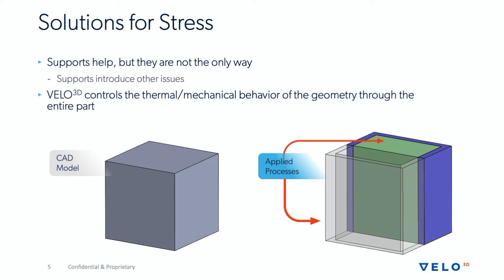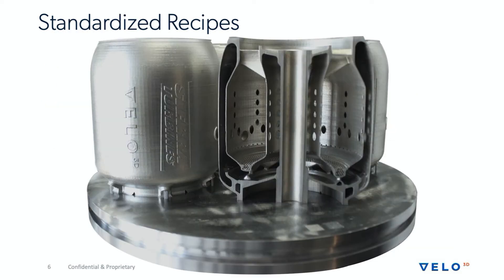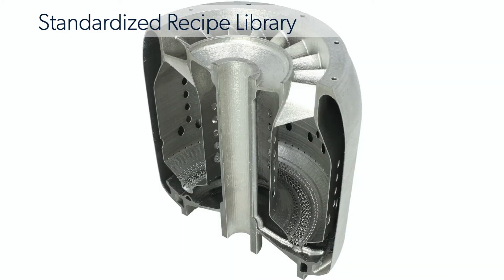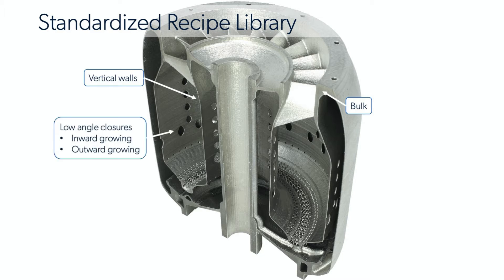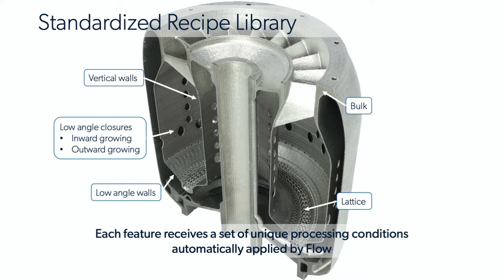These are applied specifically to regions of the part automatically by our Flow software. A good example is the Sierra Turbine's part that we printed with Velo3D support-free technology. In our preprint software Flow, specific laser processes are automatically applied to proper regions of the part. Vertical walls get their own specific process. Low angle closures — both growing inward and outward and closing upon themselves — get a specified laser parameter locally to avoid the need for added support. Lattice parameters also have their own specific laser process to enable low overhangs of strut-type geometry. Bulk parameters are also automatically applied to ensure faster throughput of the part.